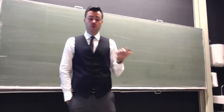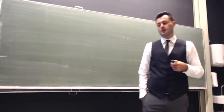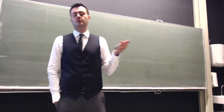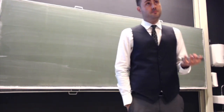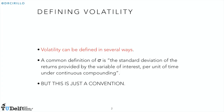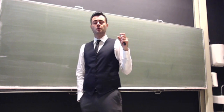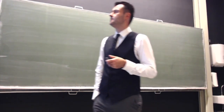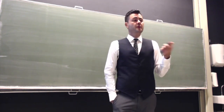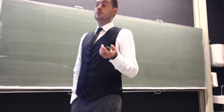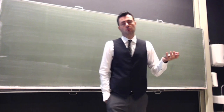Volatility — if you say volatility to the average financial guy on the market, he will say that volatility is essentially the standard deviation of the returns. The common definition is indeed that sigma, our volatility, is the standard deviation of the returns provided by the variable of interest — for example the price of an asset — per unit of time, with continuous compounding. In this course we essentially work with continuous compounding, assuming everything to be continuous when we play with interest rates.